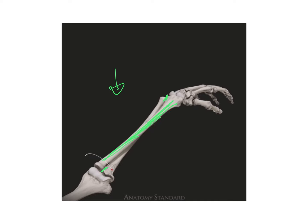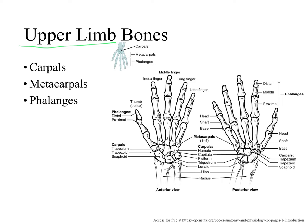As part of our upper limbs, we have our hands, which contain carpals, metacarpals, and phalanges. Carpals are the eight short bones making up the wrist. Metacarpals are the five long bones making up the palms of our hands. Phalanges are also long bones — all phalanges are long bones because they are longer than they are wide. We have a total of 14 phalanges.